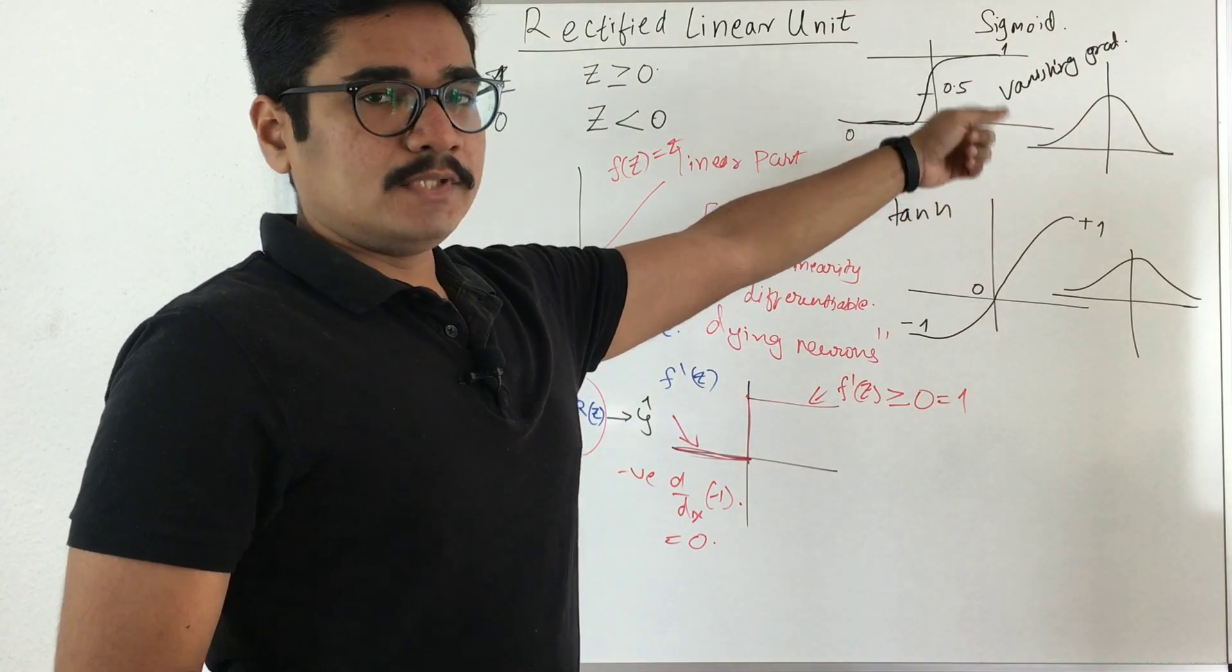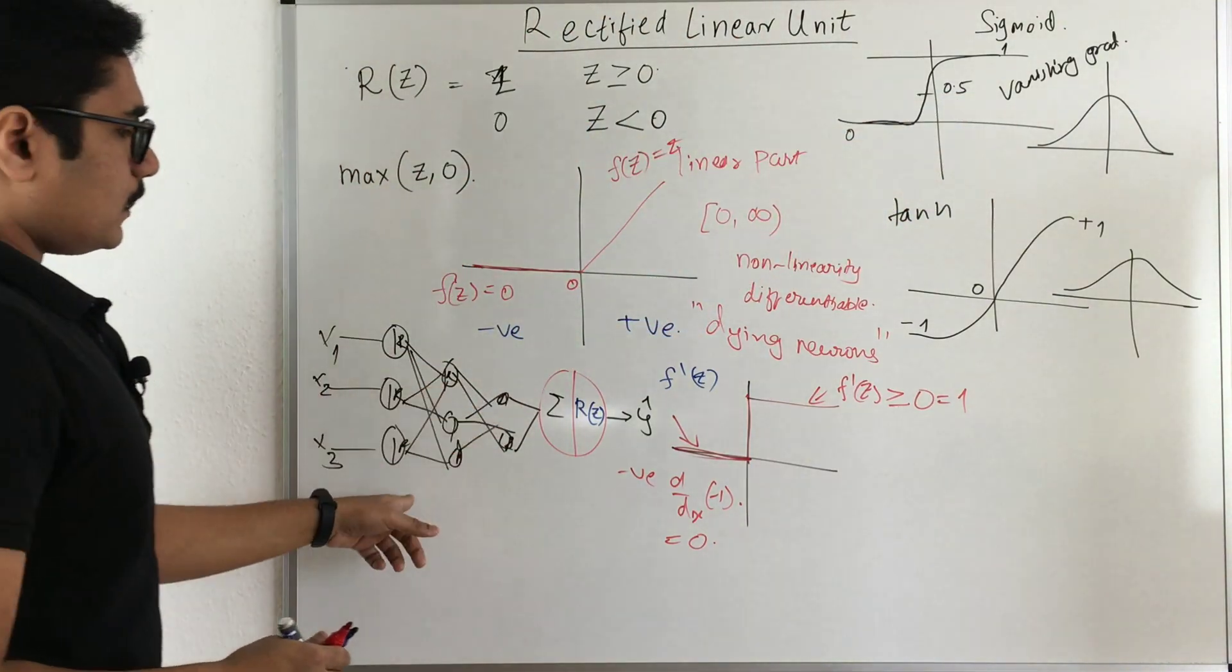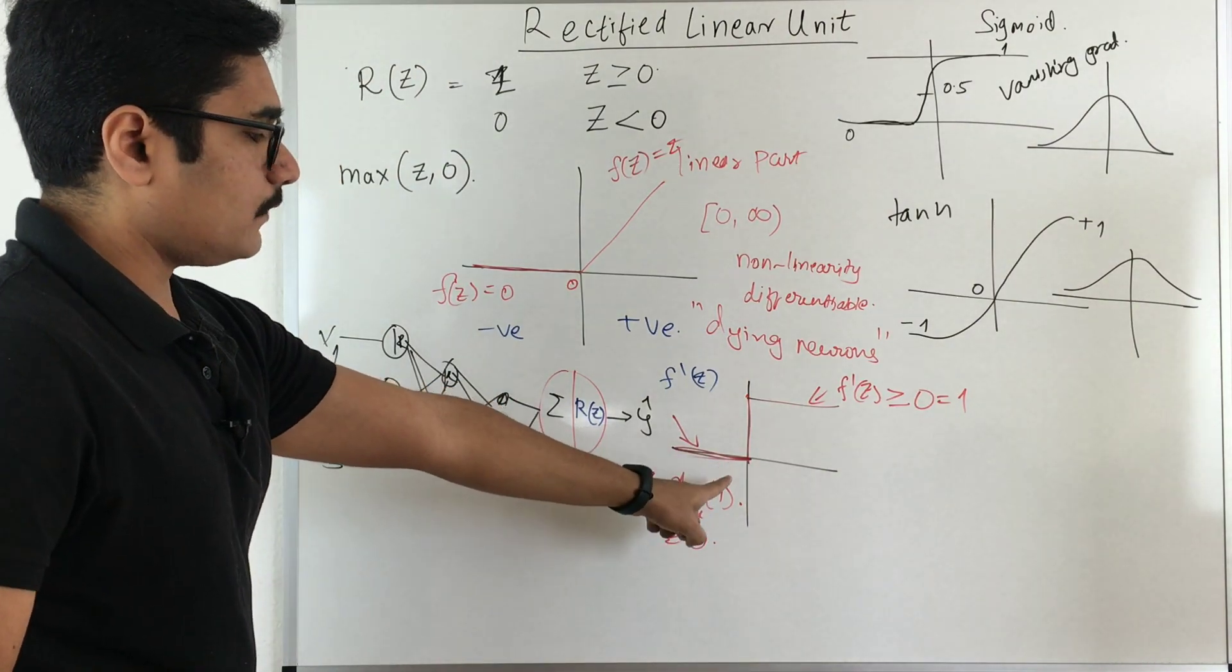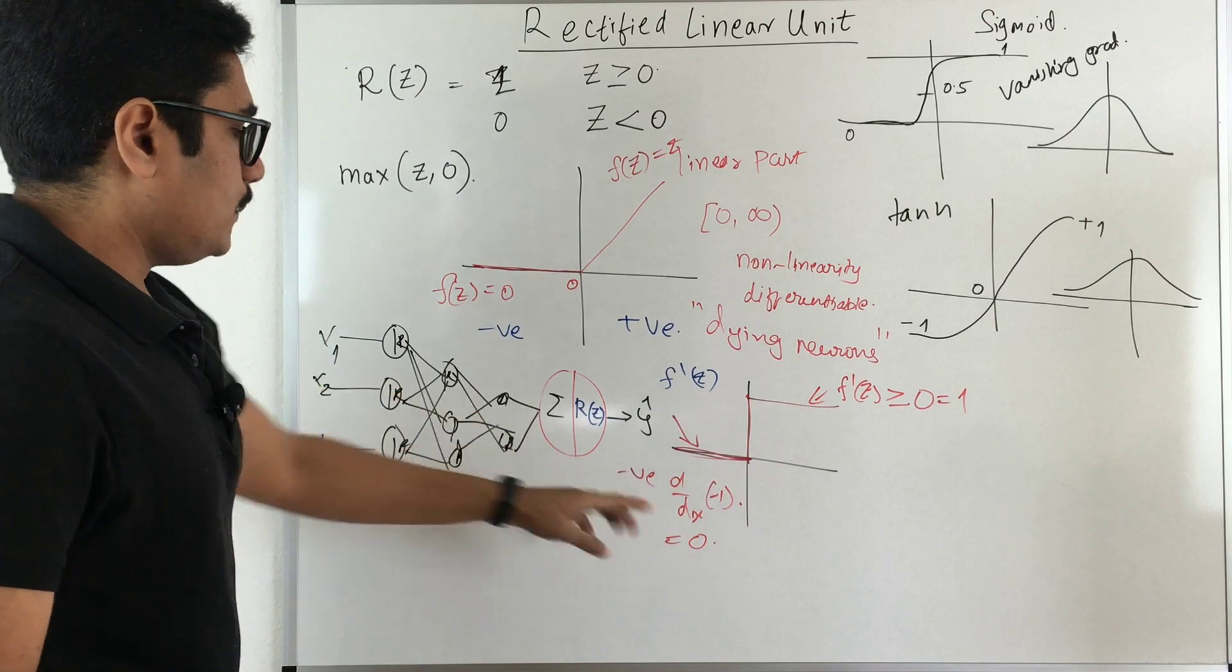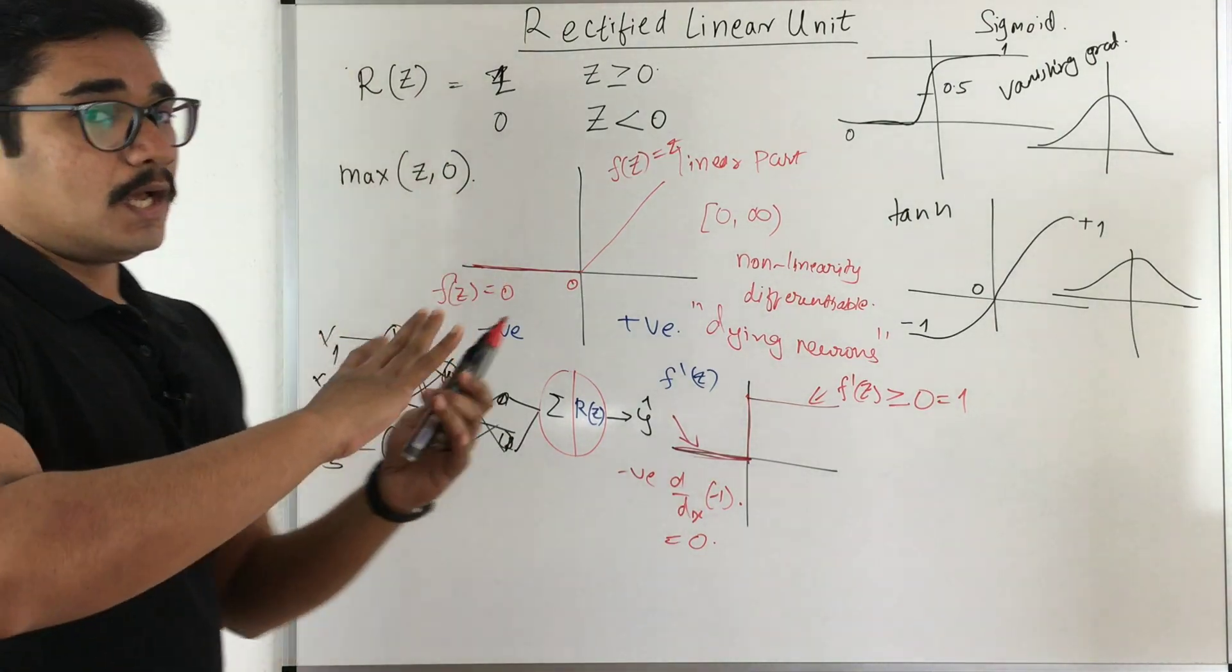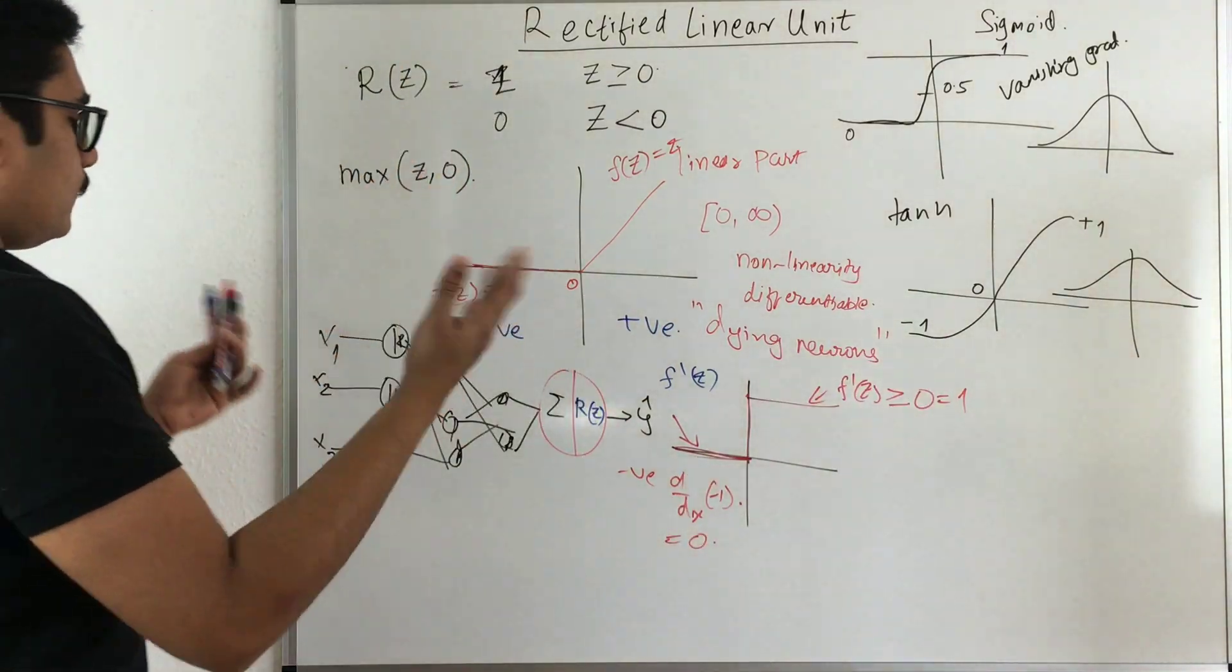So you don't want to consider your tanh or either the sigmoid function, why? Because they are having the problem of vanishing gradient. With that notion when you apply this rectified linear unit and this has particular dying neuron problem, because if you take the derivative of this then that neuron will particularly collapse.